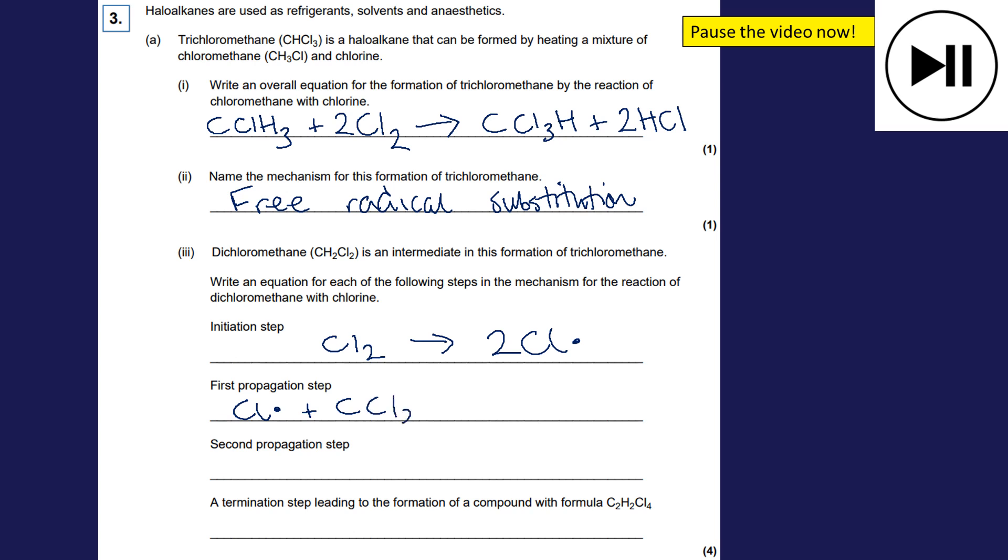The second propagation is this new free radical that I've just formed will react with more chlorine to release another chlorine free radical. And this time making my product of CCl3H.